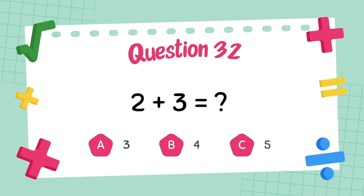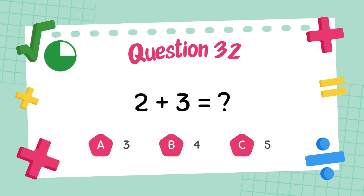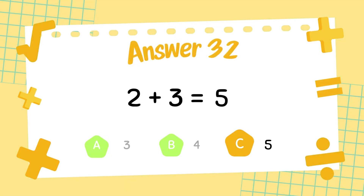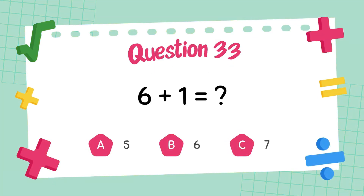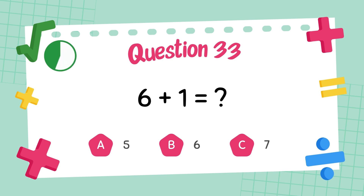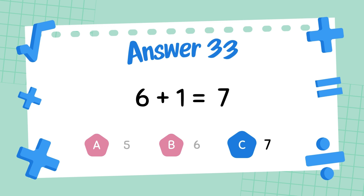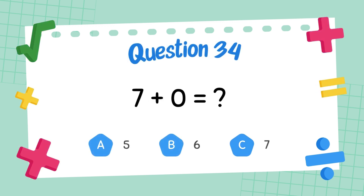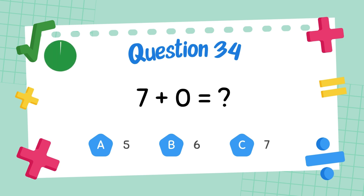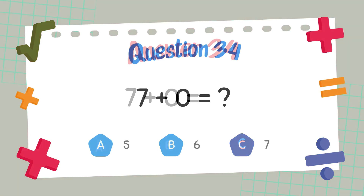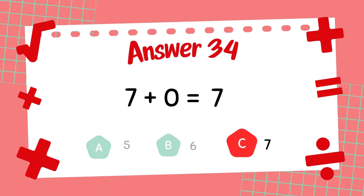What is 2 plus 3? The answer is 5. What is 6 plus 1? The answer is 7. What is 7 plus 0? The answer is 7.